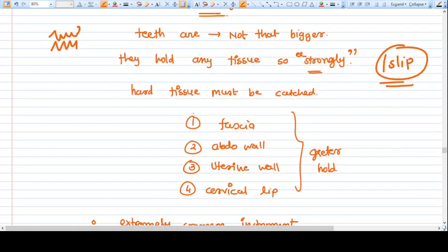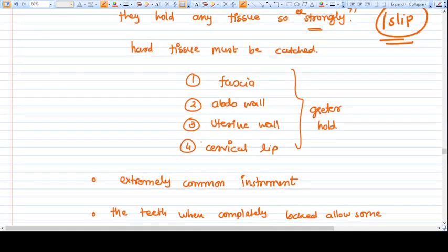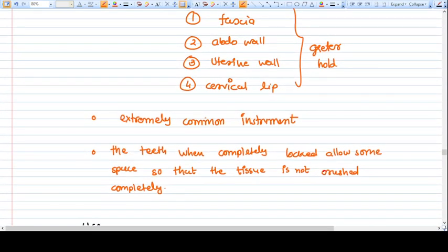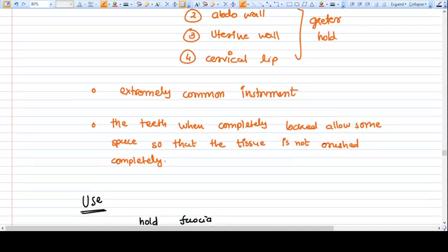Any tissue can be held or caught with the Alice forceps, like fascia, abdominal wall, uterine wall, cervical lip, etc. But remember, the structure you hold must be stronger. You can't hold softer structures with Alice forceps because it will rupture. It's an extremely common instrument.